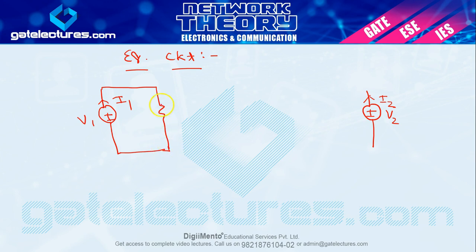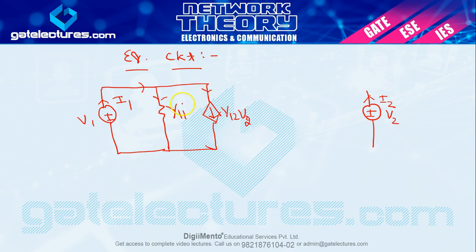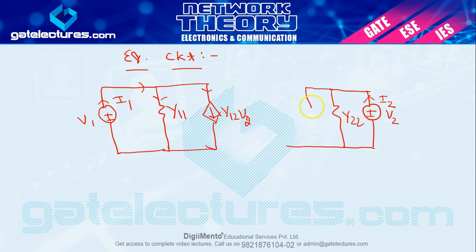The first term Y11·V1 represents an admittance Y11 across port 1 (since voltage × admittance = current = V1/impedance). The second term Y12·V2 is a dependent current source because it depends on V2. So the current I1 divides between admittance Y11 and dependent current source Y12·V2. Similarly for the second loop, there is admittance Y22 and a dependent current source Y21·V1.